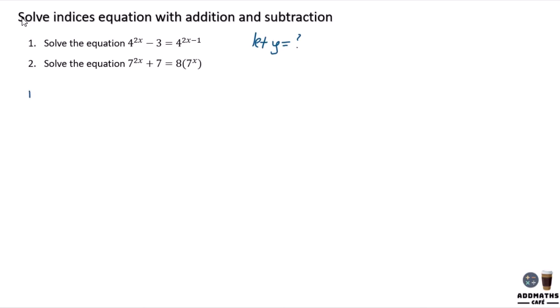So in this case, the first question we are doing solve 4^(2x) - 3 = 4^(2x-1). As you can see from these parts, you can actually separate it into two, which is 4^(2x) times 4^(-1).